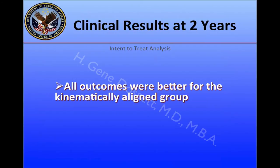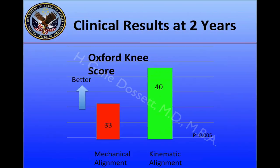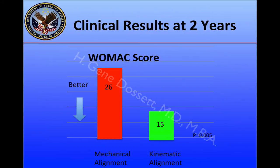Our clinical results at two years showed all outcomes were better for the kinematically-aligned group. The Oxford Knee Score was better, the combined Knee Society Score was better, flexion was 8 degrees better with the same cruciate-retaining prosthesis, and the WOMAC score was better.